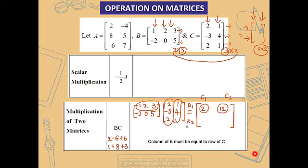Next, we write the element at row 2, column 1. Row 2 times column 1: −2×2 = −4, 0×(−3) = 0, 5×2 = 10. So −4 + 0 + 10 equals 6.